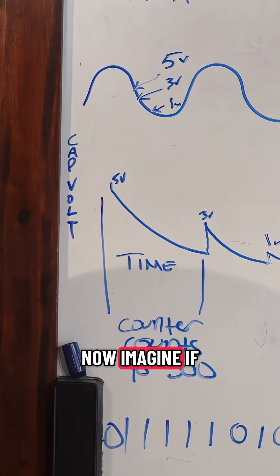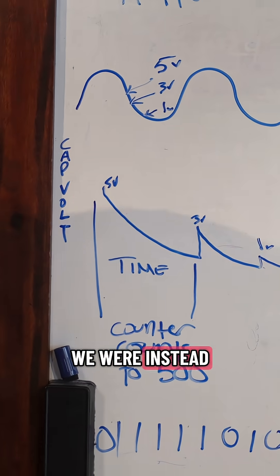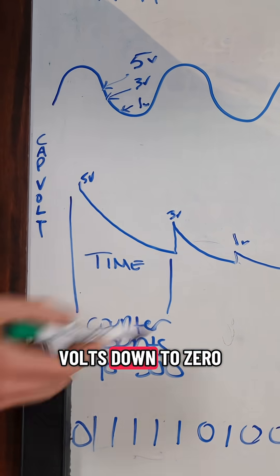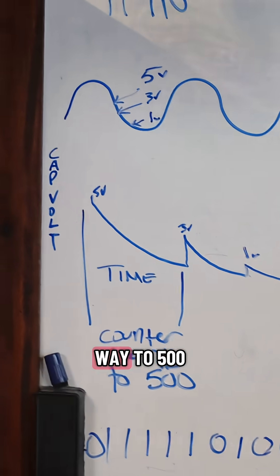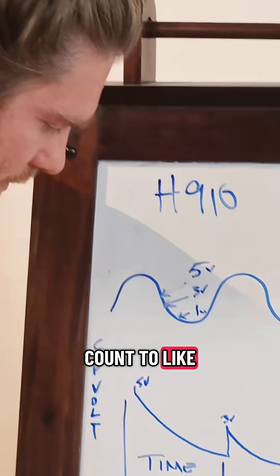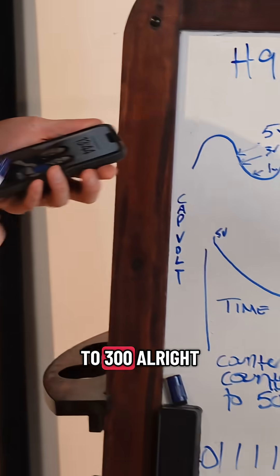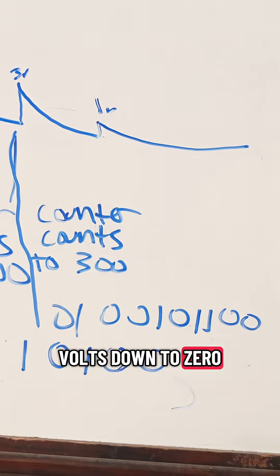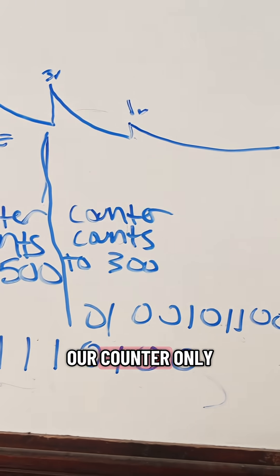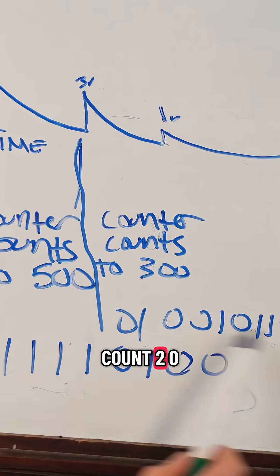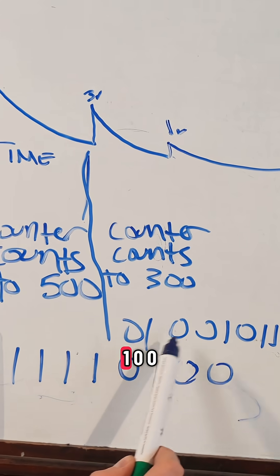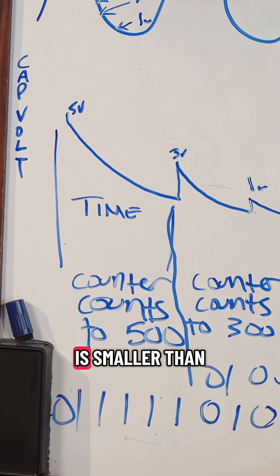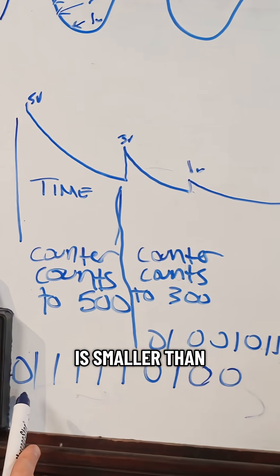Now, imagine if we were instead going from 3 volts down to 0. We're not going to count all the way to 500 — we're probably going to count to like 300. So when we're going from 3 volts down to 0, our counter only has time to count to 0,1,0,0,1,0,1,1,0,0. This number is smaller than this number.